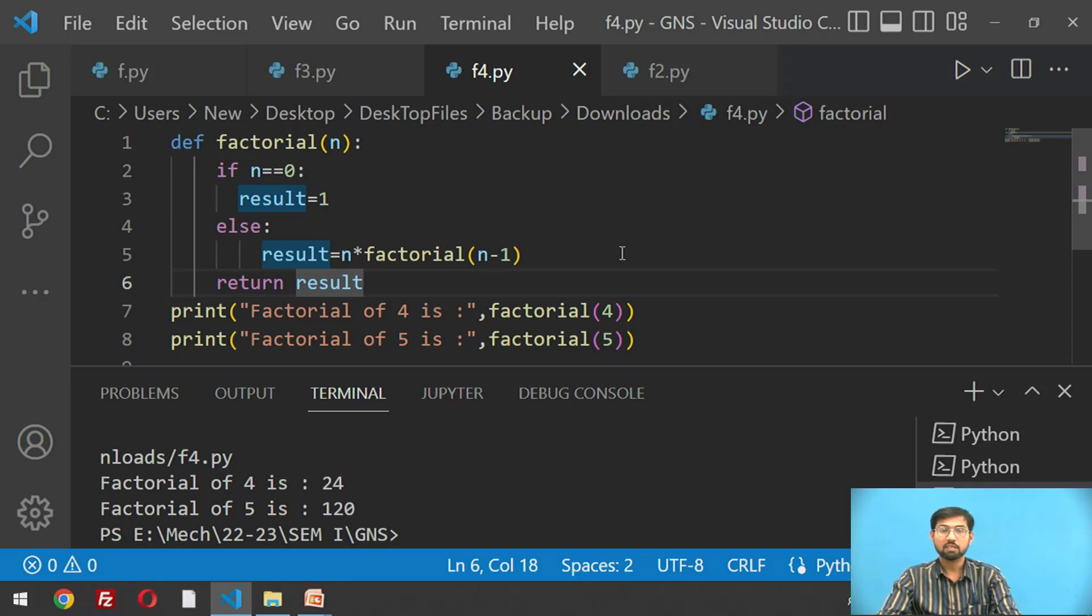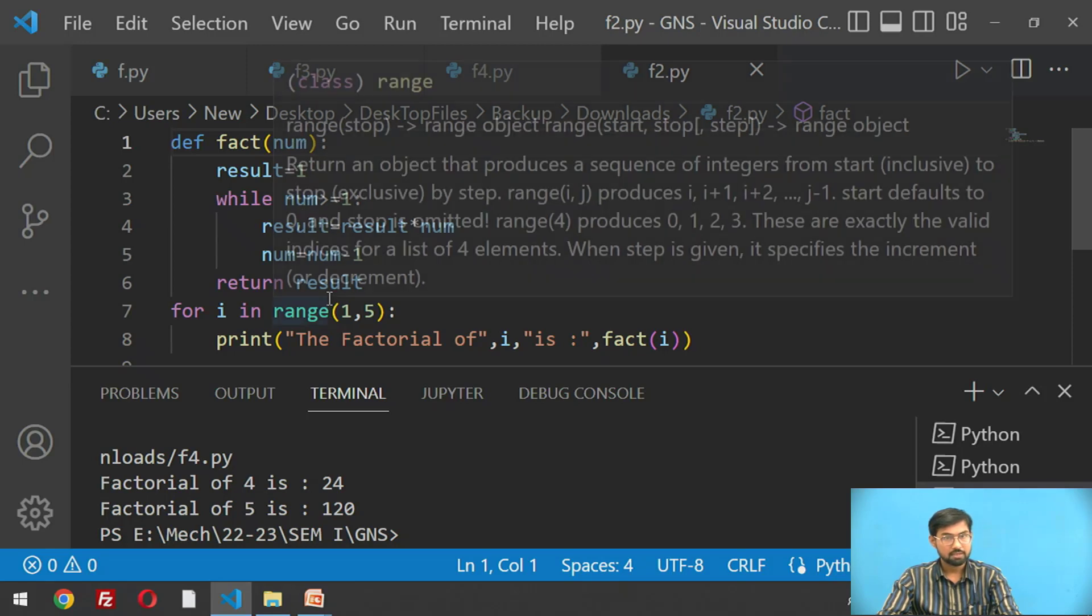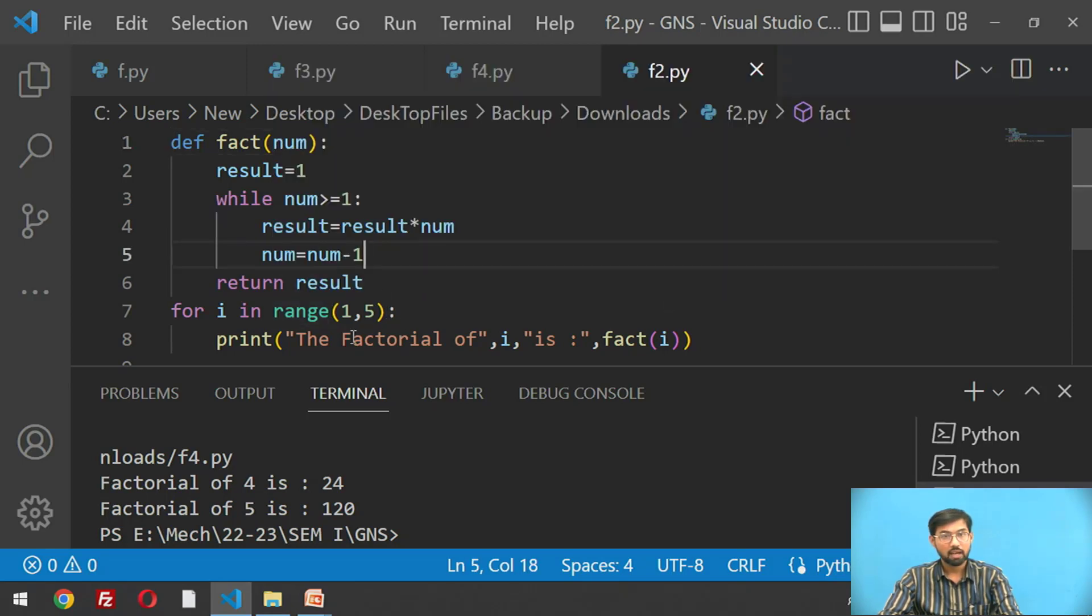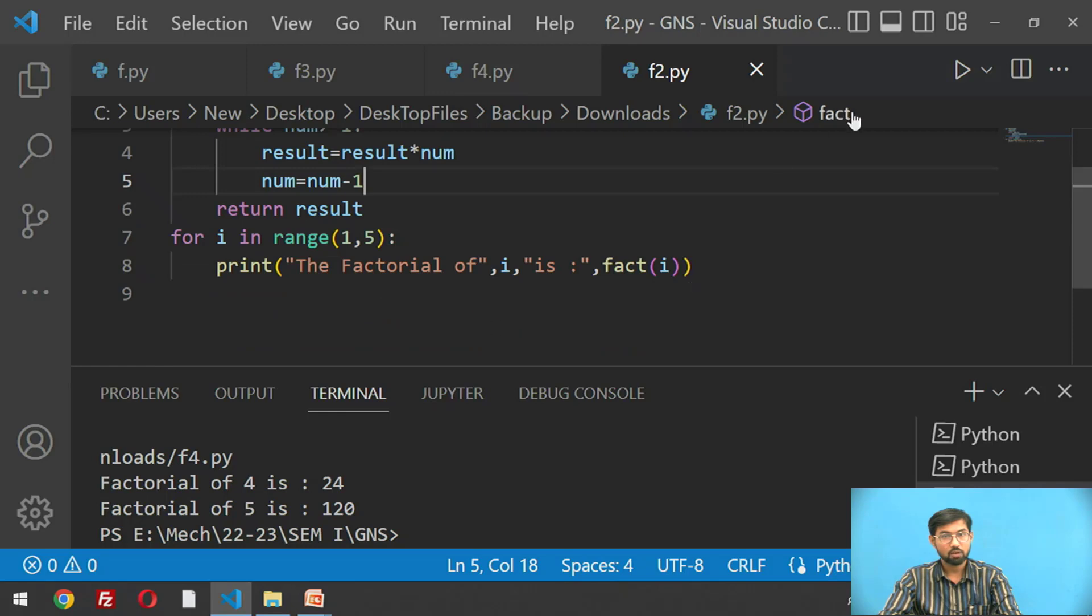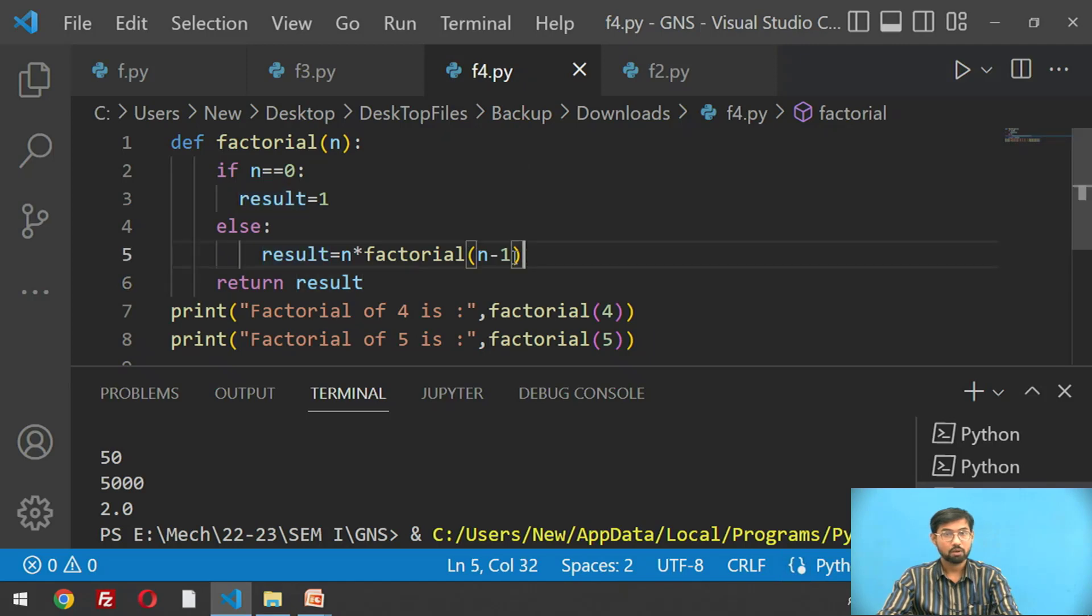If we are writing the program without recursive function, this same factorial program we write using a while loop and return statement. We return the result and use for loop for factorial of 2, 3, 4. So 2, 6, 24, these are the factorials of these numbers. This factorial example is simple and this is recursive because this function is calling itself.